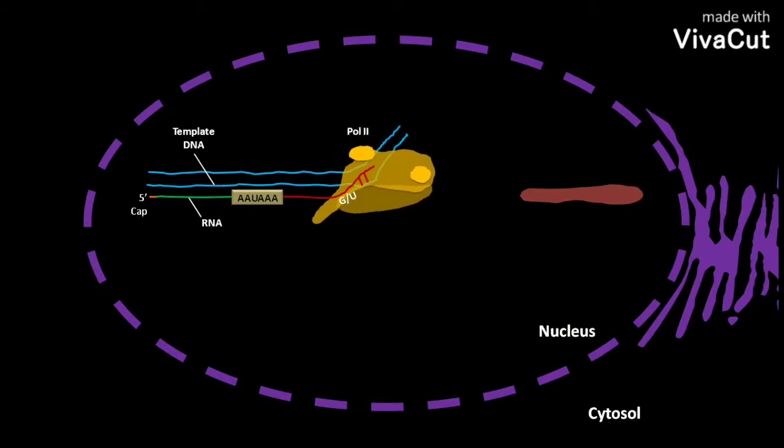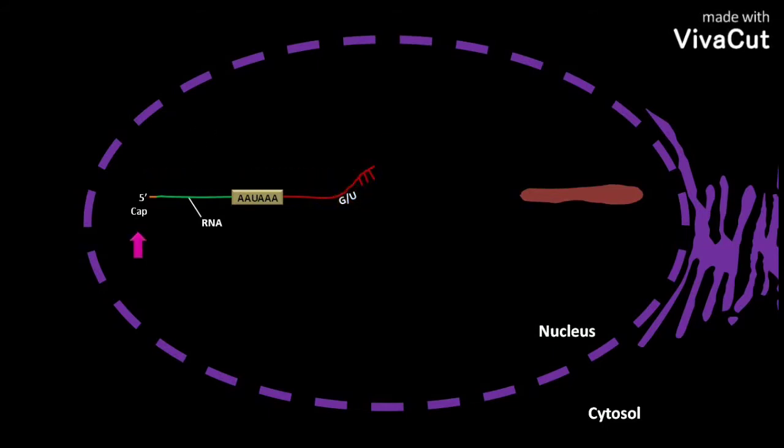This RNA contains a 5' cap, the primary transcript segment, the downstream sequence 5'AAUAAA. This sequence is highly conserved.